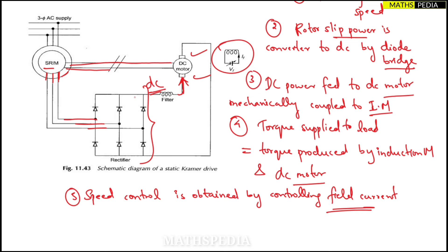Now for large speed range, for large speed variations, instead of this diode bridge we can use the thyristor bridge - we have used in the previous drive, that is Scherbius drive. Thyristor bridge can be put instead of diode bridge for larger speed range variations.